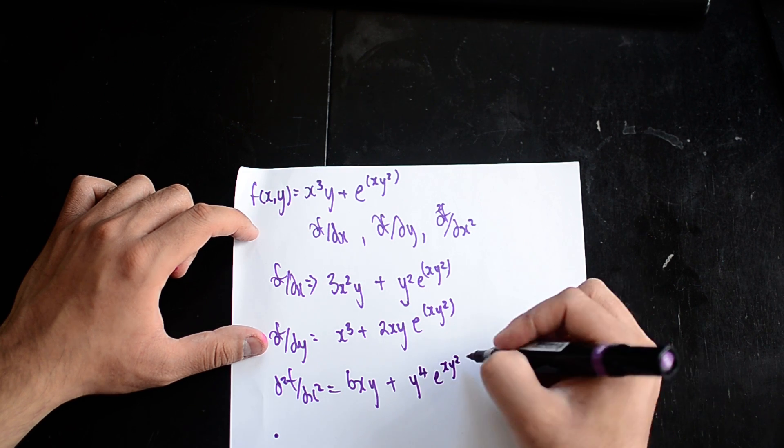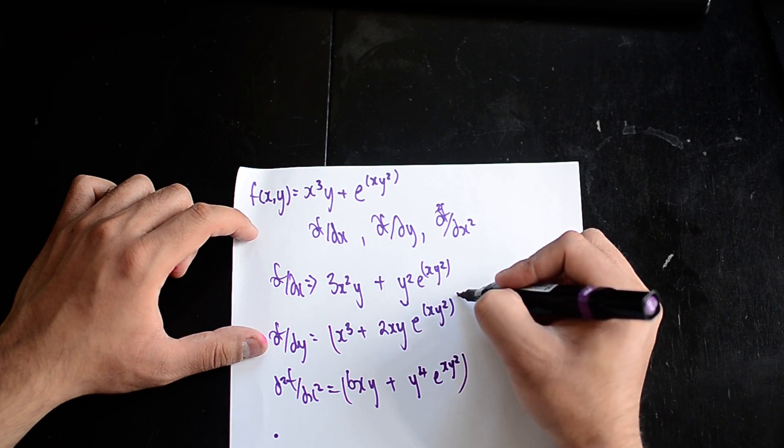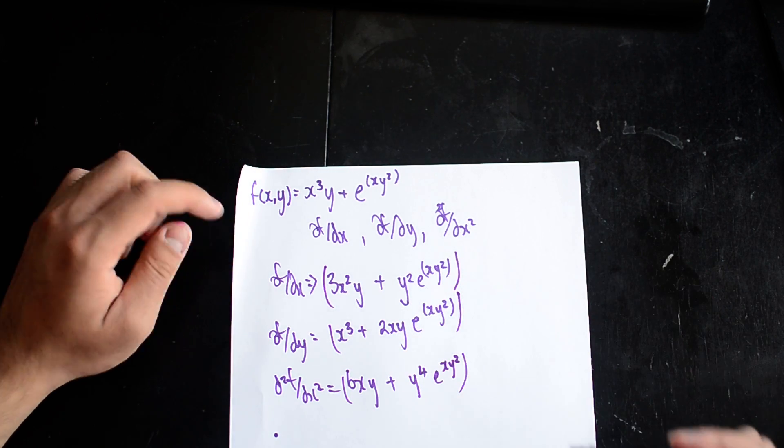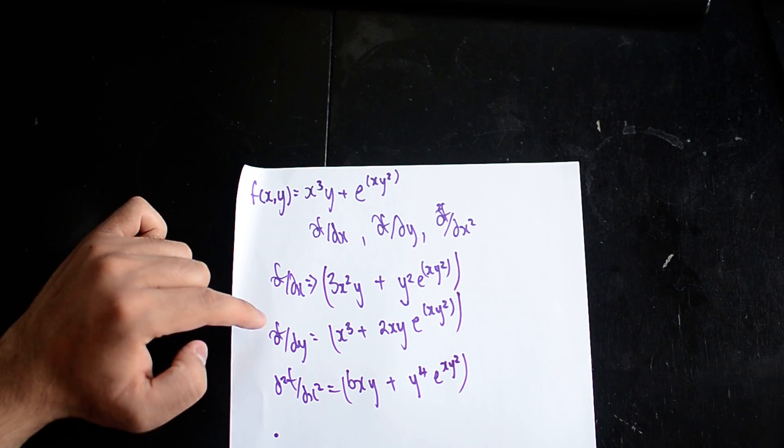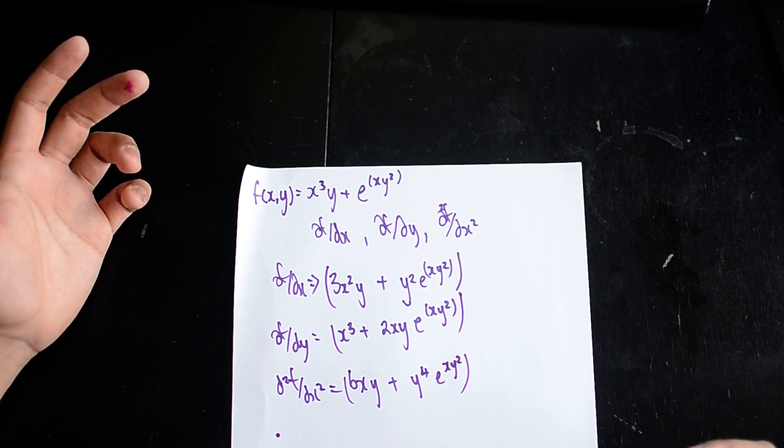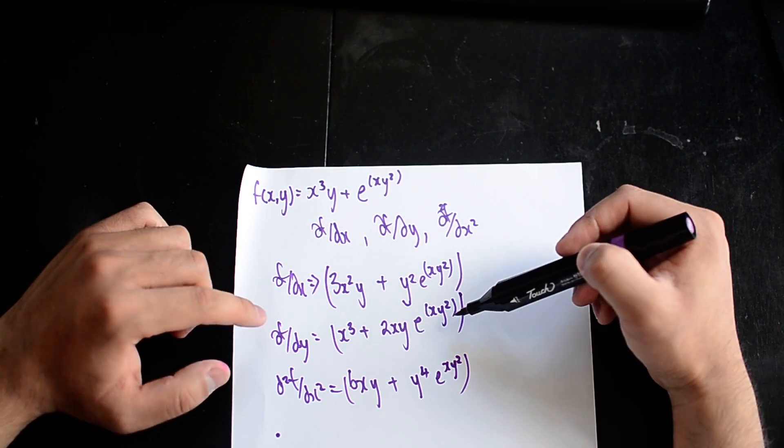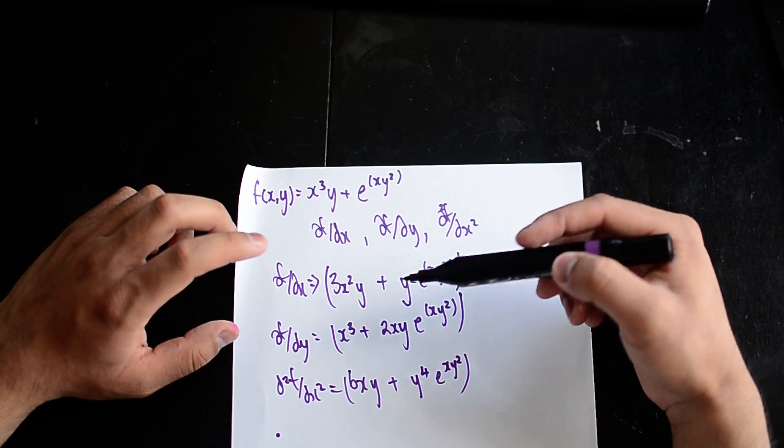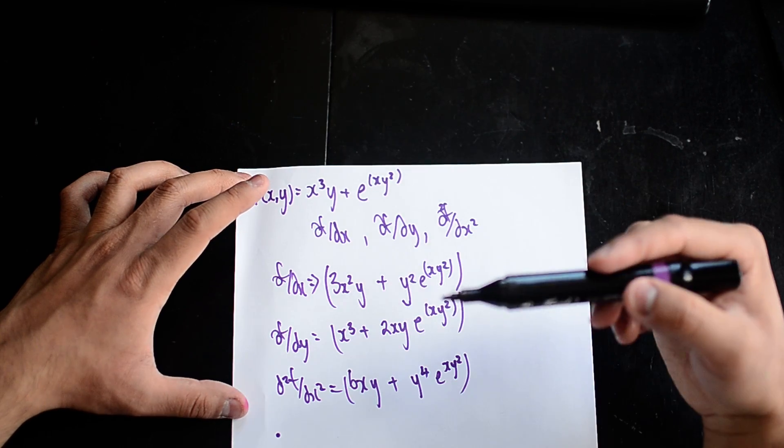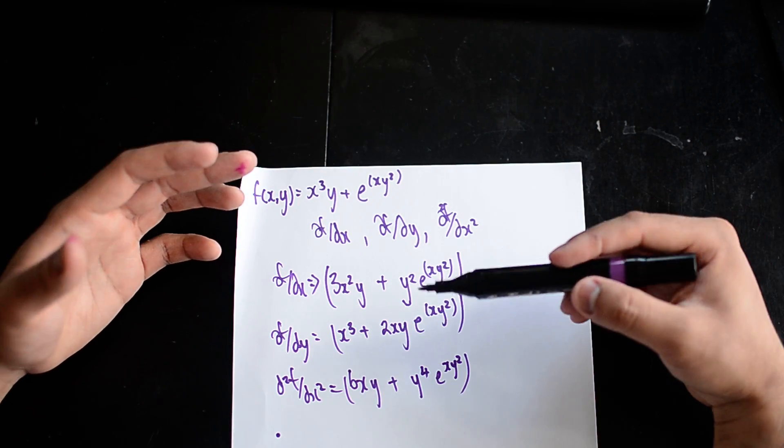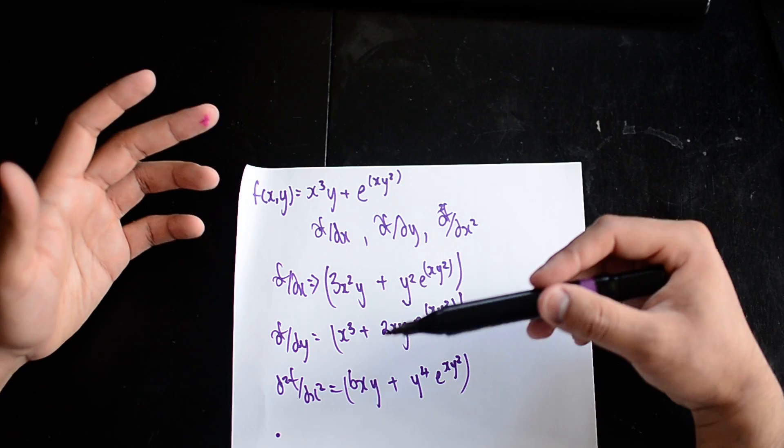So as you can see, these are my three partial derivatives. Now if you wanted to do d²f/dy², it'd be the exact same thing: you take this, you hold the y terms constant, you differentiate it.